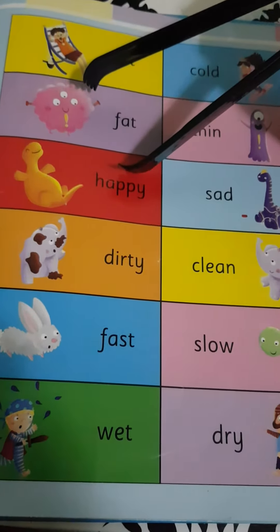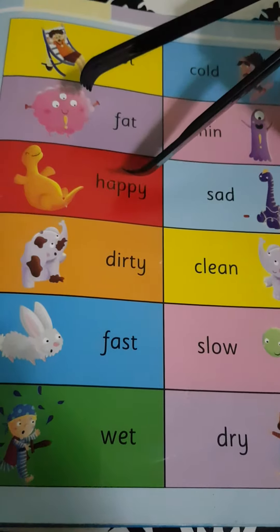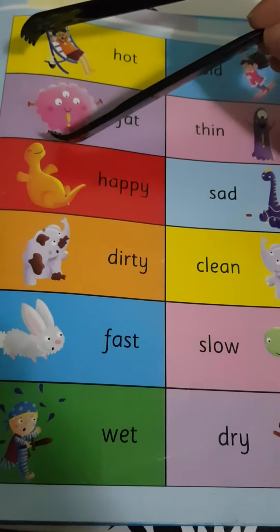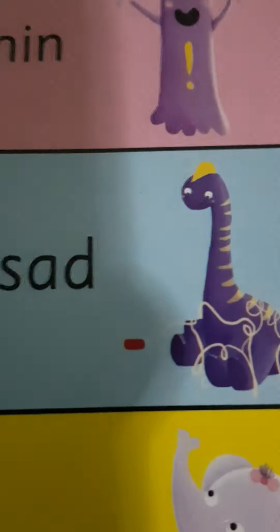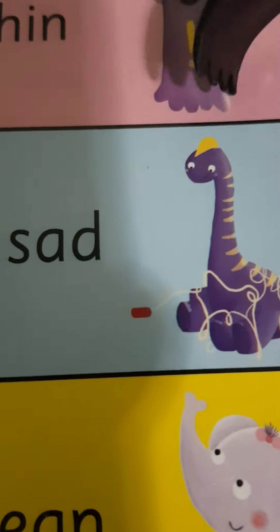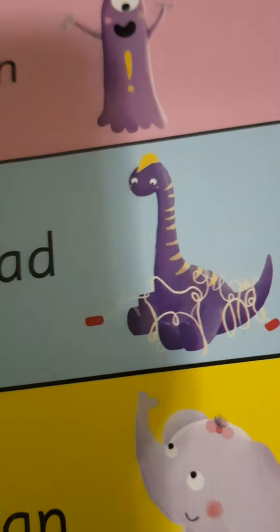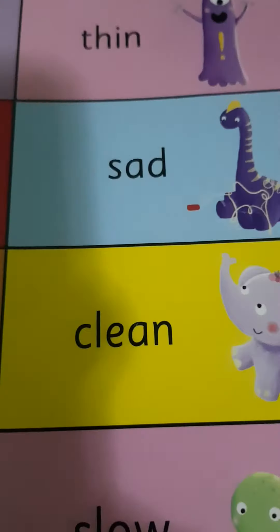Happy. Hi, Mr. Dinosaur. You're happy because you're smiling and playing. And oh, you're sad. Why are you sad? You're all tied up — what's going on? You're tied up in your skipping rope. Happy. Sad.